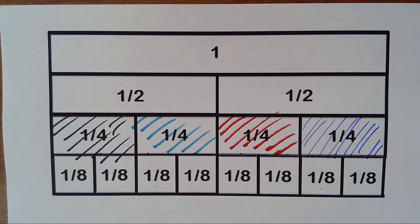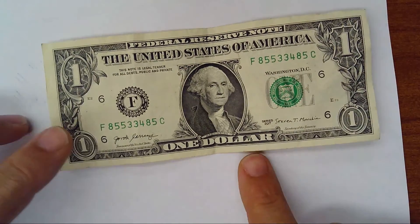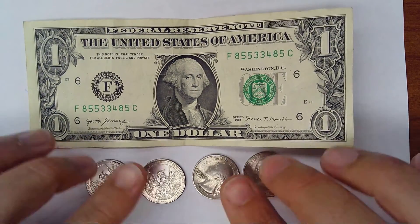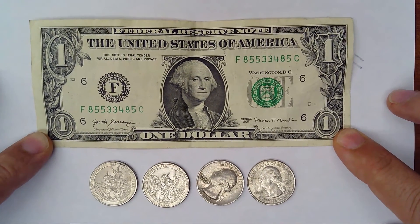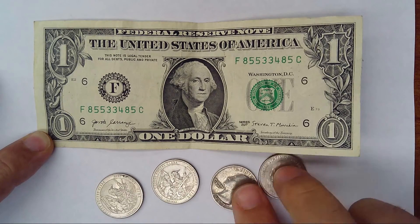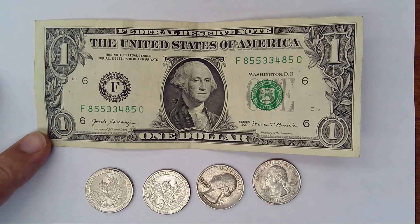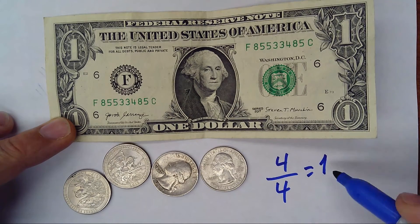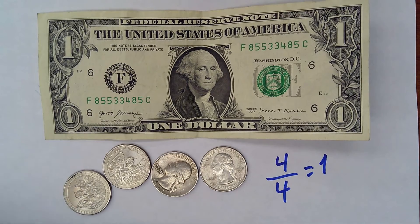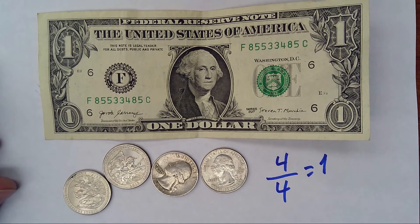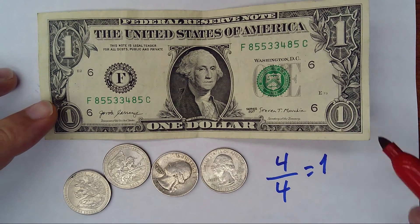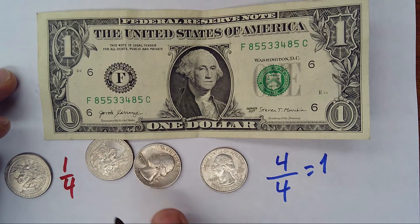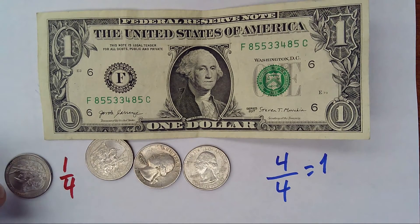Now let's look at a real-world representation using money. Here we have a dollar and four quarters. Those four quarters represent the dollar — one, two, three, four. The dollar would be four out of four, and four divided by four equals one. This coin is called a quarter dollar because it's one fourth of one hundred cents, which is one dollar.